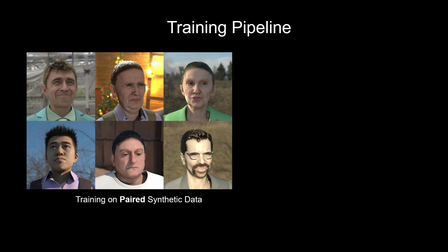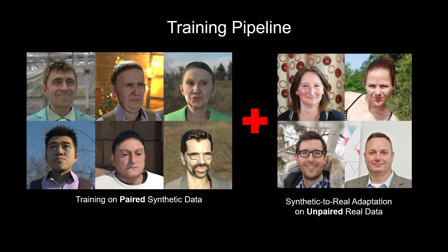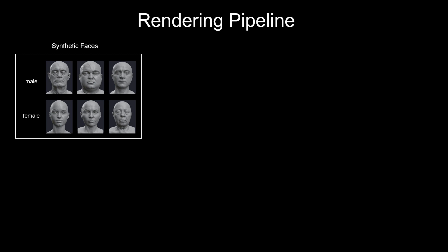To train our network, we render a large-scale synthetic dataset tailored for portrait relighting. We then bridge the domain gap and increase the output realism by using a novel synthetic-to-real domain adaptation technique. The rendering pipeline works as follows.